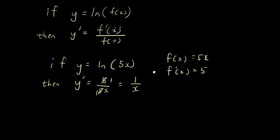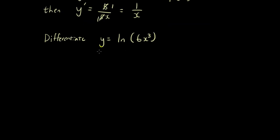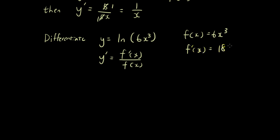Let's do a different one: differentiate ln(6x³). So y' equals f'(x) over f(x). Let's write these down on the side — f(x) is 6x³, and f'(x) is 18x². Now we substitute these two things in, so we get 18x² over 6x³.